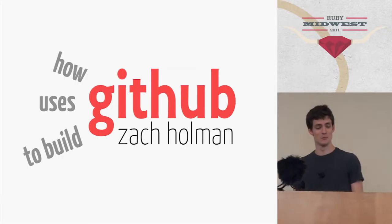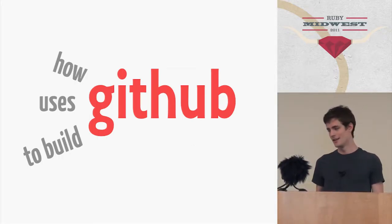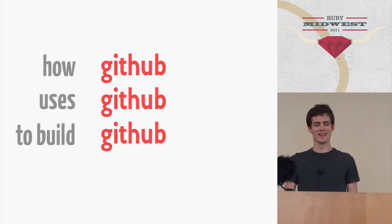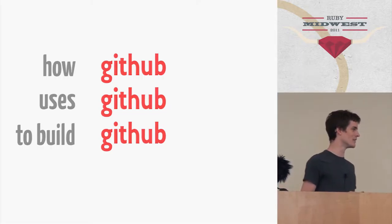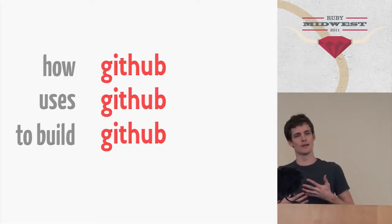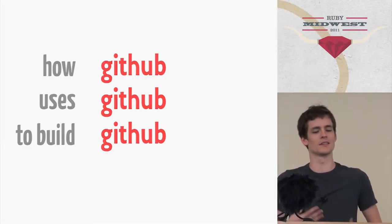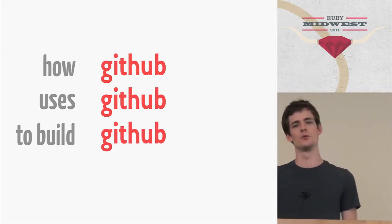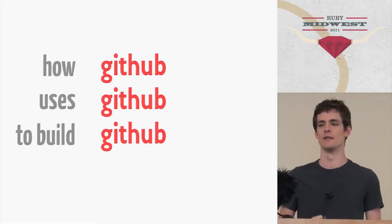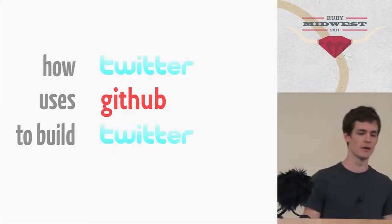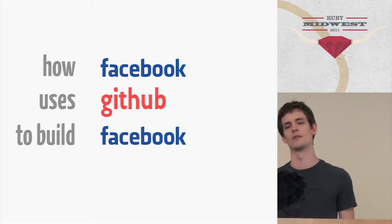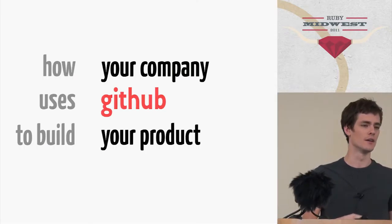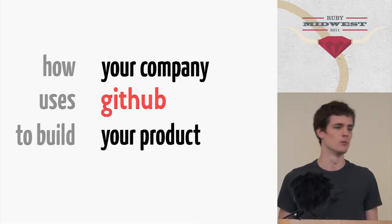This is how GitHub uses GitHub to build GitHub. The secret is that this isn't really about GitHub the tool — I'll talk about it because it's easy to use as an example. But I really want to talk about our workflow, our process, how we use our tools, how we choose our tools, and why that makes for a really fun development environment. I don't think this is really about GitHub specifically. If I worked for Twitter or Facebook, I'd give the same talk. I want this to make you think about how your company can use these processes and workflows to improve your own product.